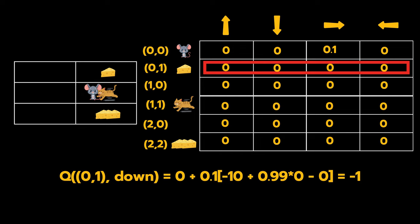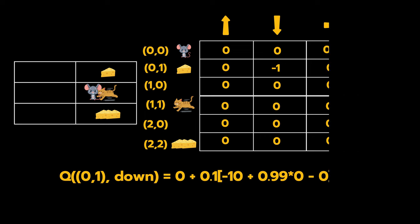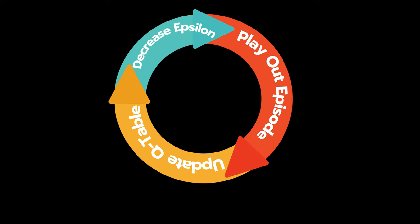If you calculate this, then our Q value estimate for this state-action pair becomes -1, and the game is over. But Jerry learns from his mistakes.